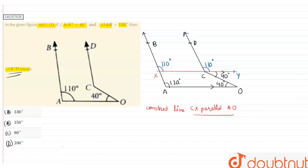Now finally we get our angle OCD equals to 110 plus 40 degrees, which comes out to be 150 degrees, which is simply our option number B.